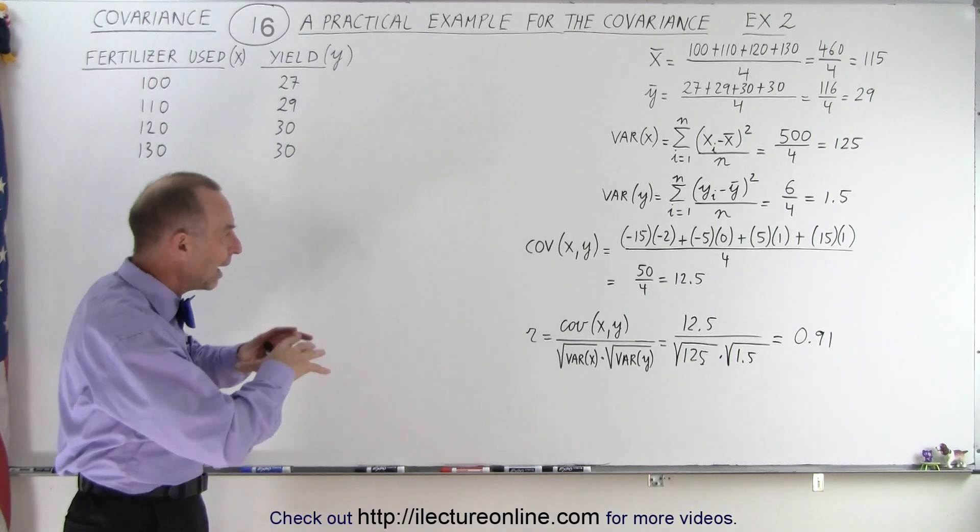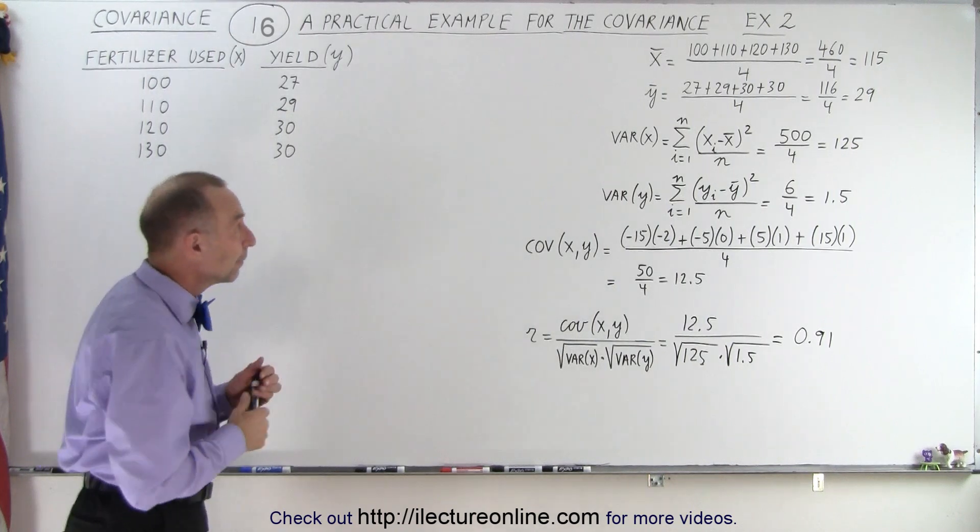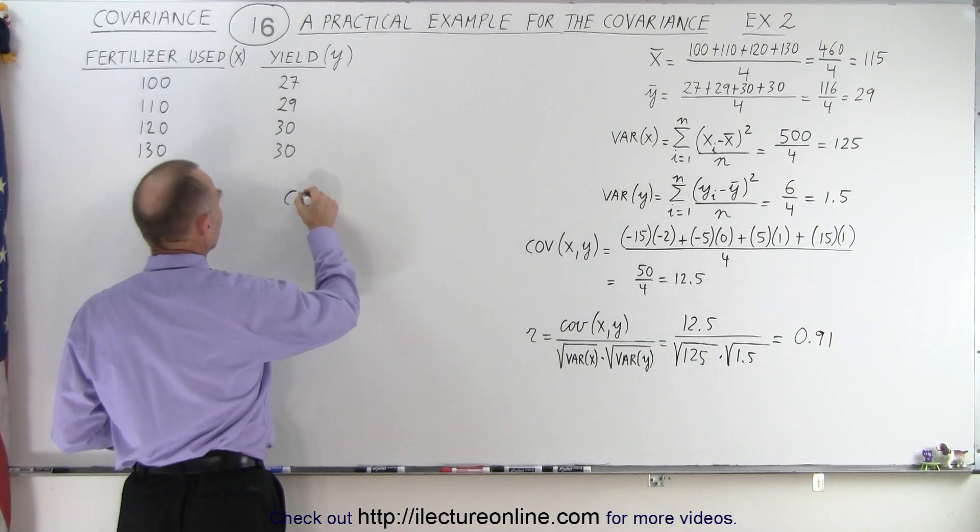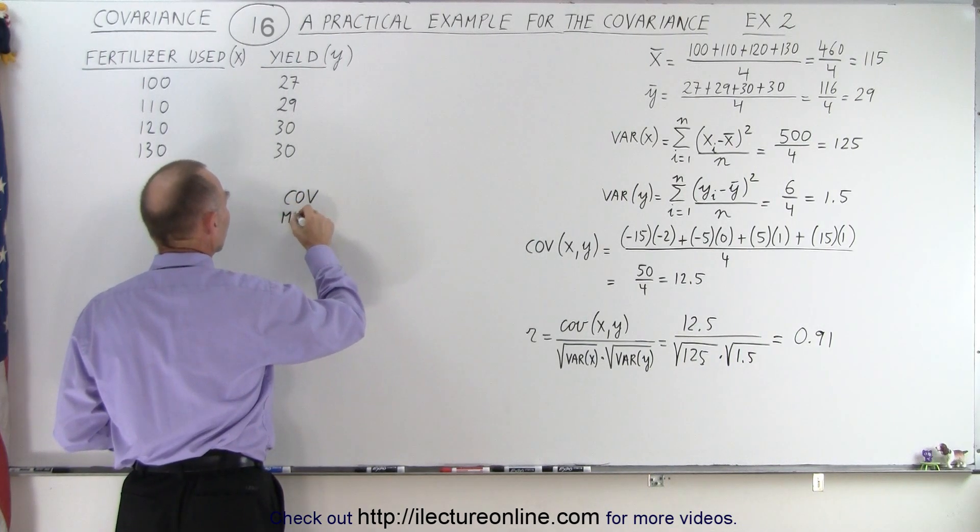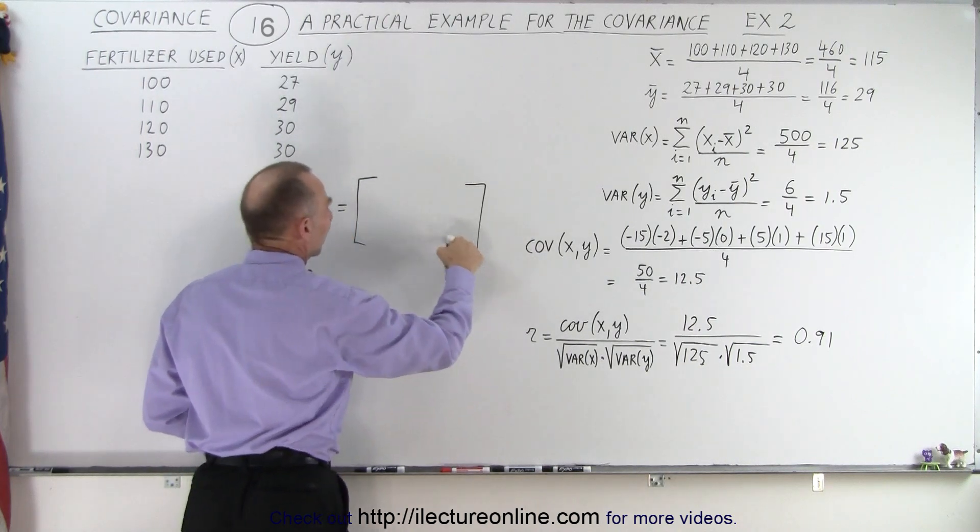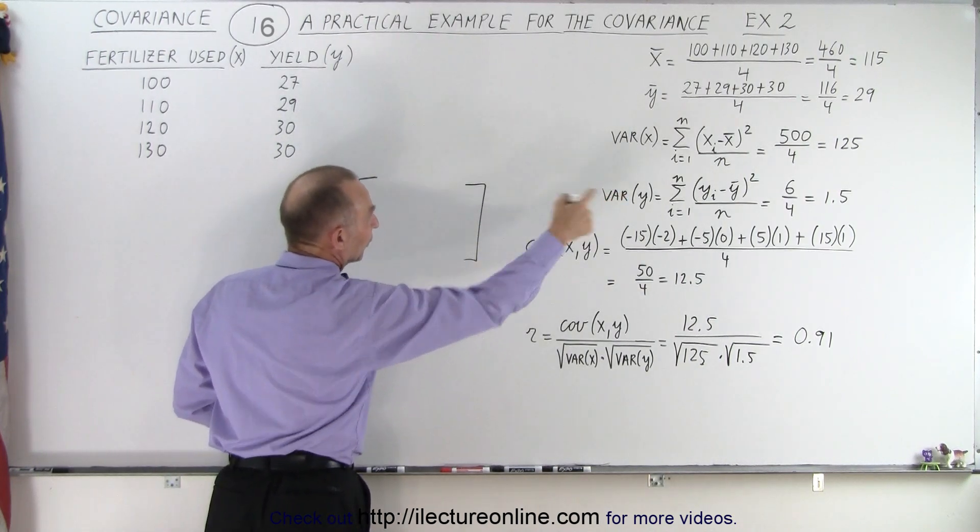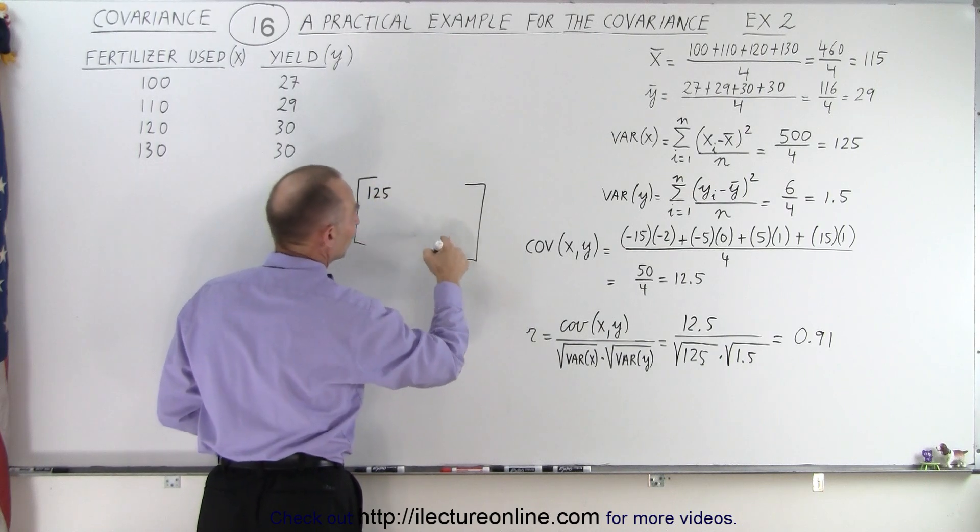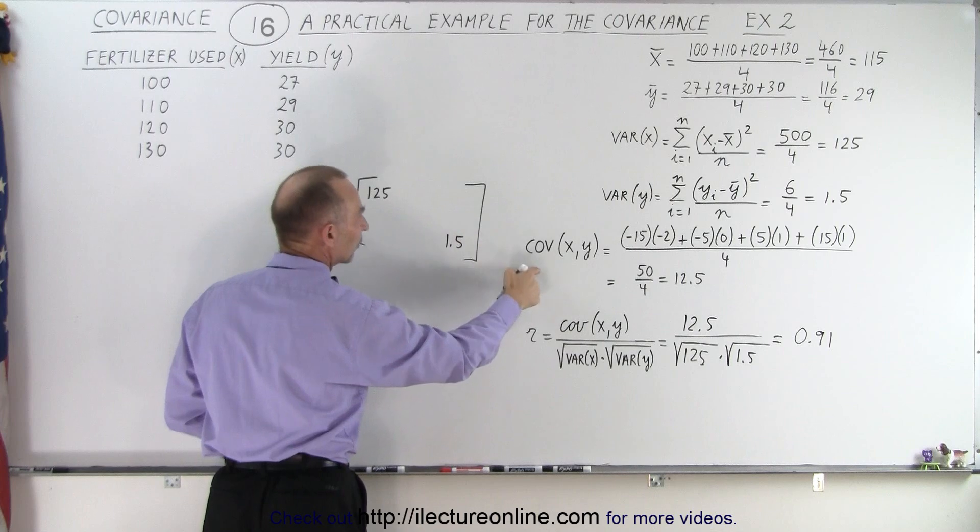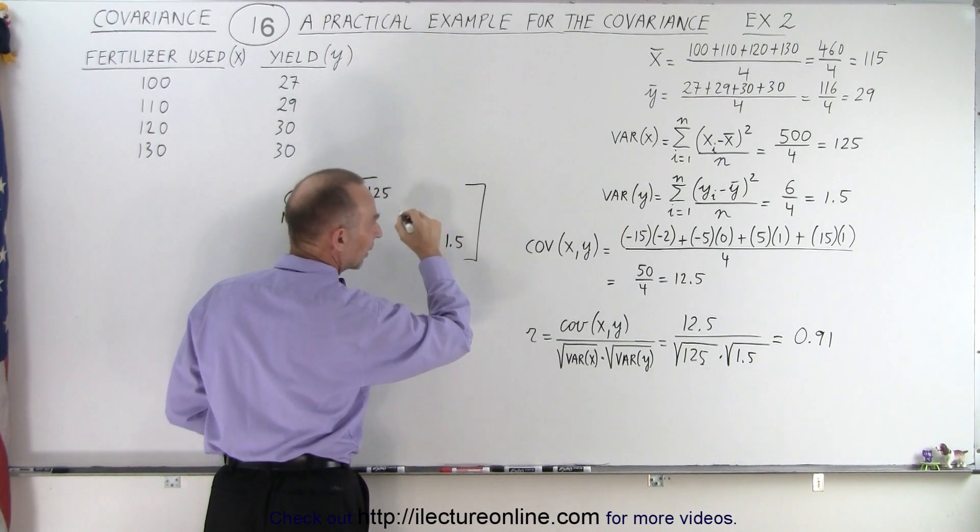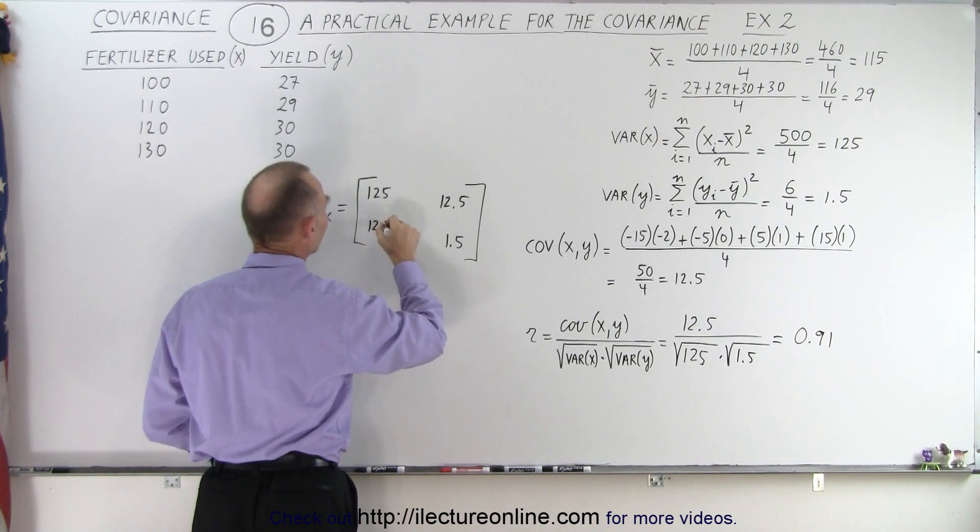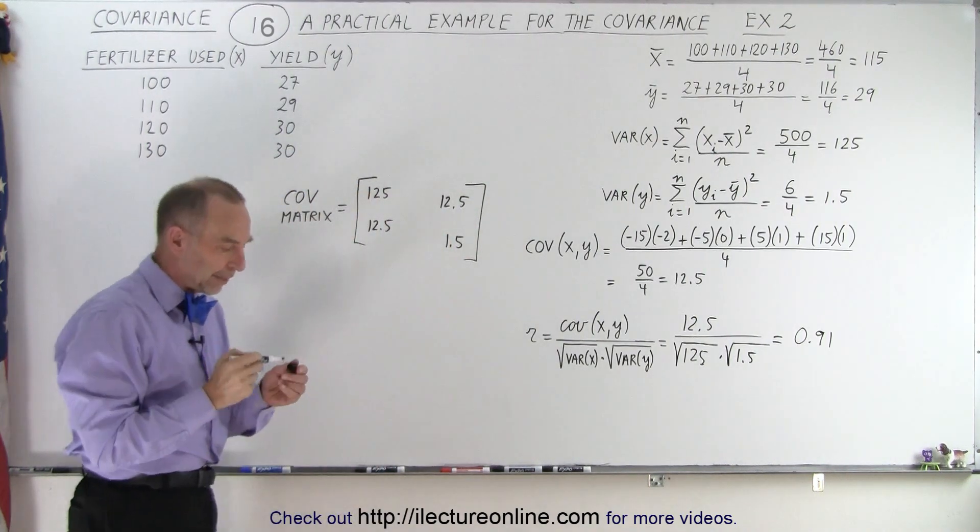Let's go ahead and put together the covariance matrix to get a feel for that. So if we write up the covariance matrix, in the diagonal elements, we're going to get the variances of the two variables. The variance in X is 125, and the variance in Y is 1.5. The off-diagonal elements are the covariance calculation, which is 12.5. So here we get a visualization of what's happening.